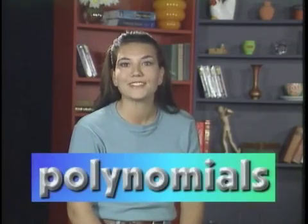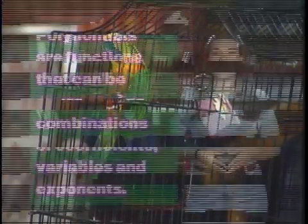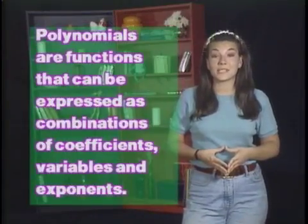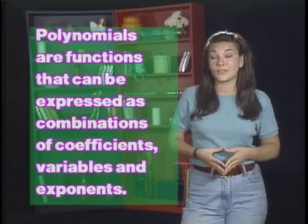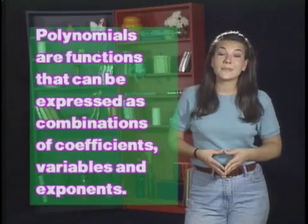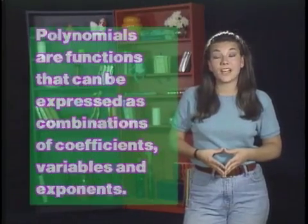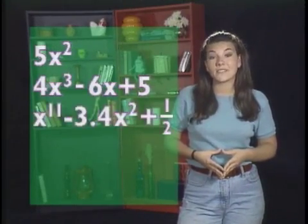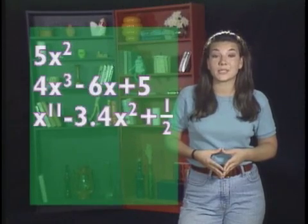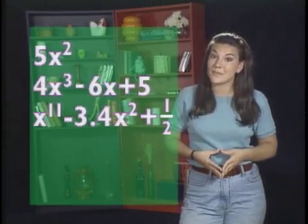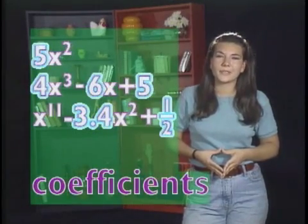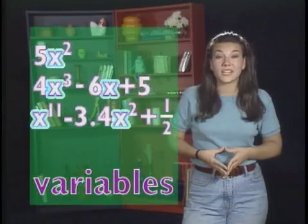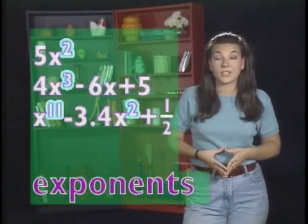There are different kinds of functions grouped into various categories. One main category is polynomials. Polynomials are functions that can be expressed as combinations of coefficients, variables, and exponents. Some examples of polynomials are 5x squared; 4x cubed minus 6x plus 5; and x to the 11th power minus 3.4x squared plus one half. Remember, the coefficients are constants, or any real numbers. The variables are letters, and exponents have to be whole numbers.